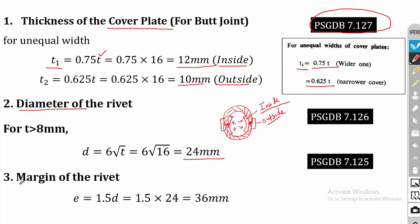The third step is the margin of the rivet. E = 1.5D, which is common for both lap joint and butt joint. Referring to the design procedure, E = 1.5 × 24 = 36 mm.